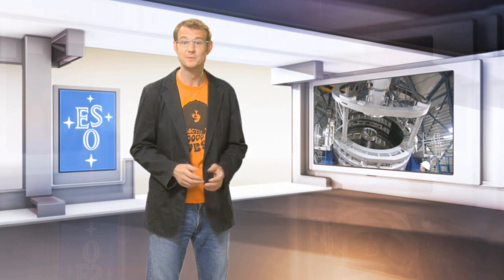VISTA has a main mirror that is 4.1 meters across, which makes it the largest telescope in the world that is entirely dedicated to surveying the sky. The mirror is also the most highly curved of its size and quality ever made and its construction was a major challenge.